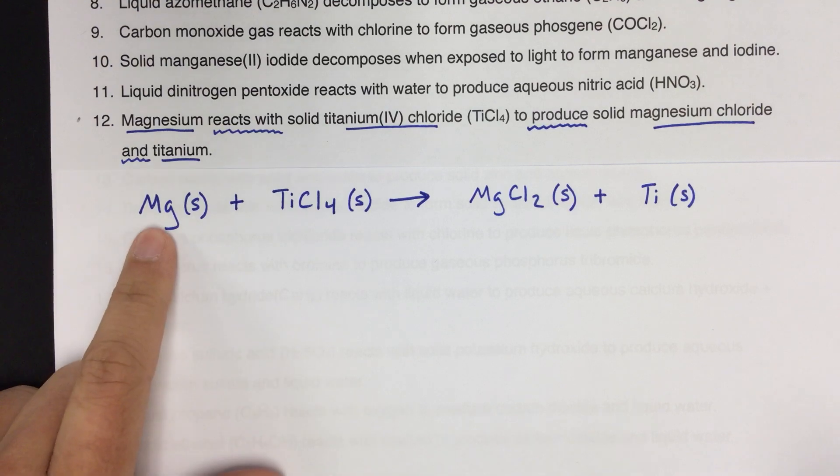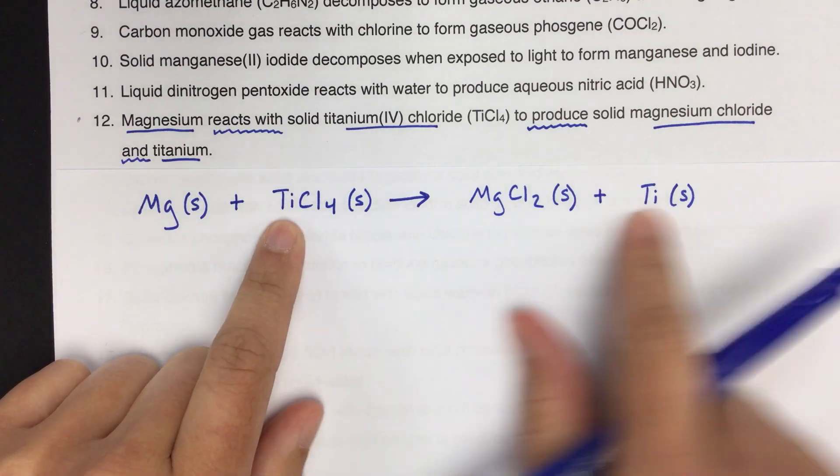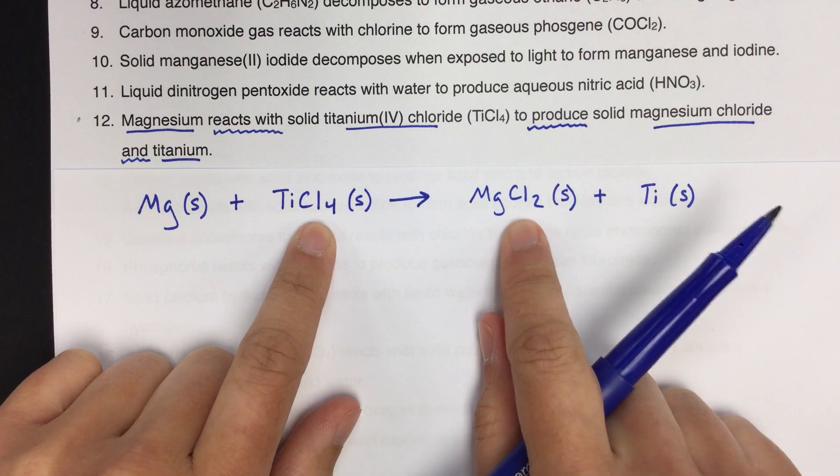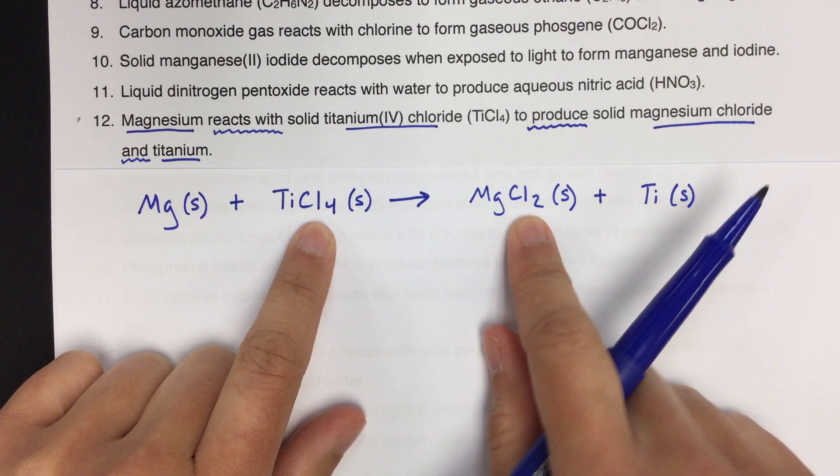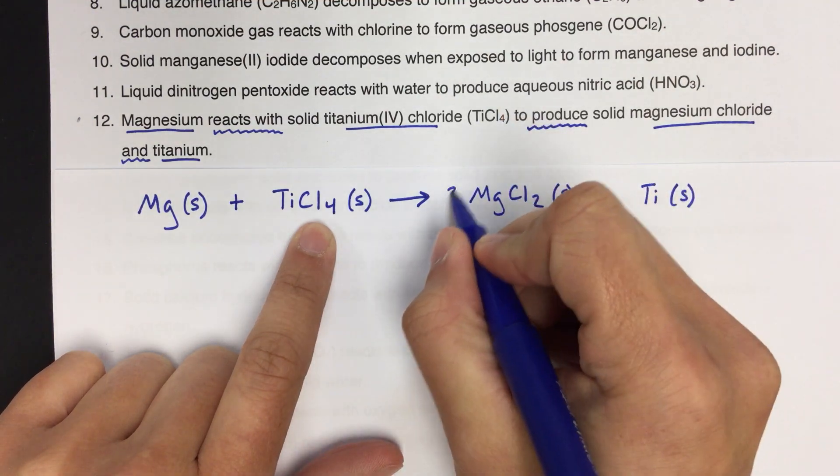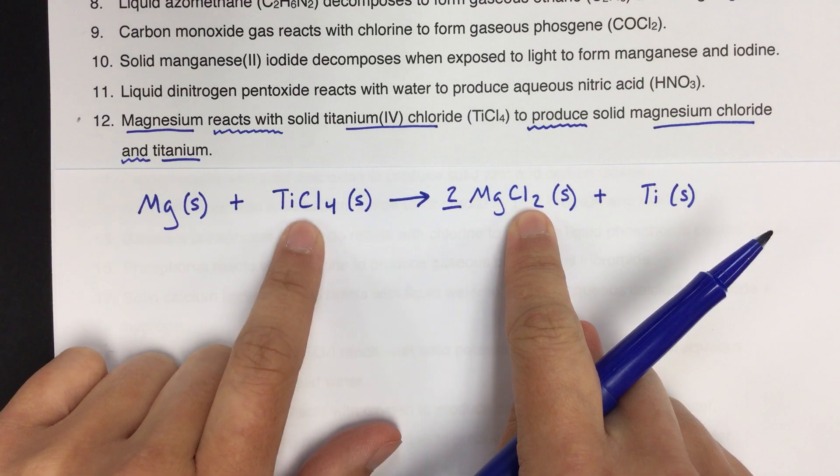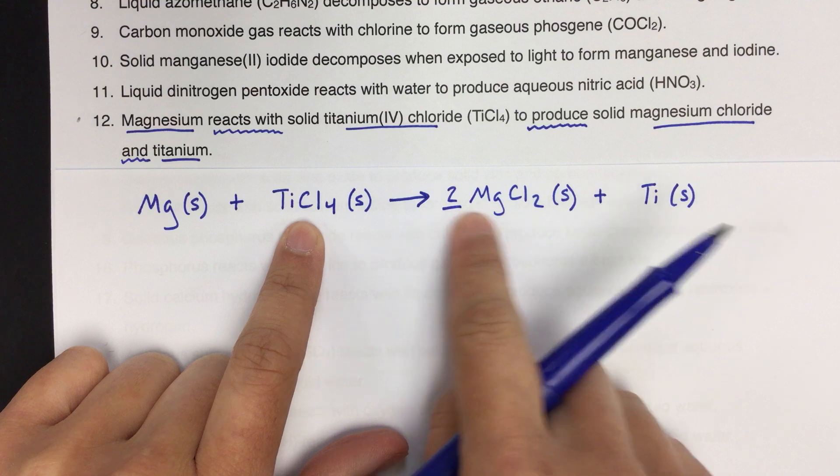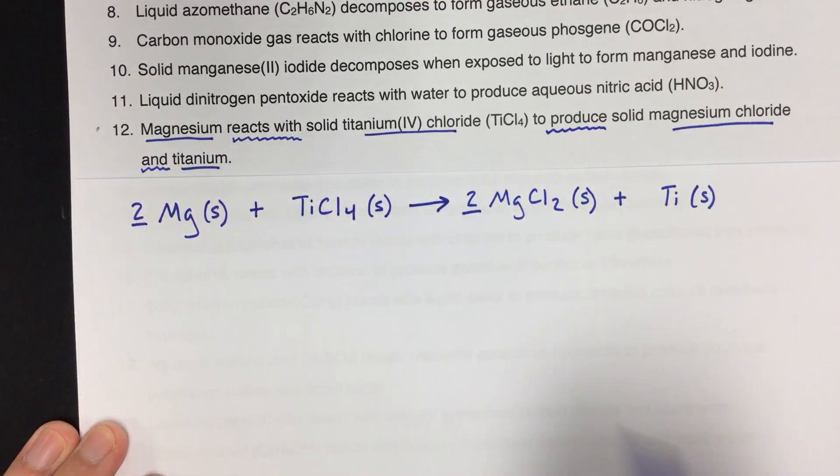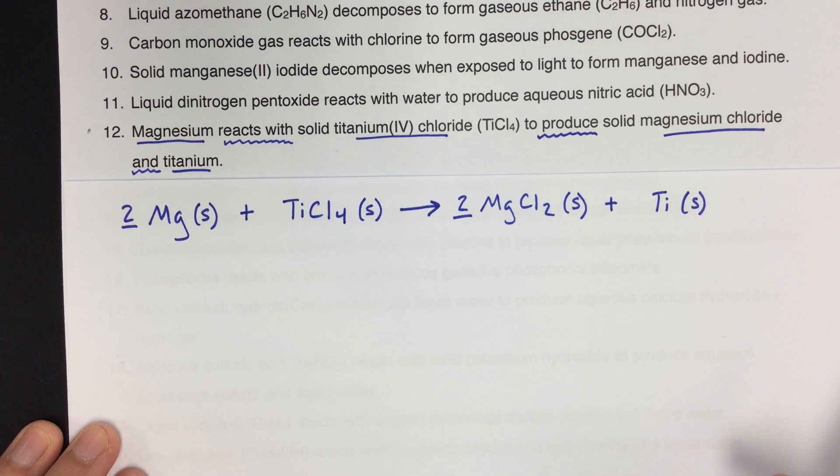I'm going to go quickly through the balancing. I'm going to start with magnesium: one and one. So those balance. And then we have Ti, one and one. Those balance. Cls, we have four on this side. We have two on this side. So we need to multiply this by two. So now we have two times two is four chlorines, which matches that. But now I've changed my magnesiums. Now I have two magnesiums here. So I need to go back and make sure I have two magnesiums on this side. So now everything should be good.